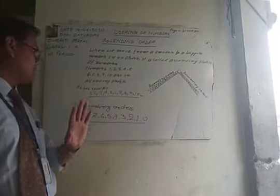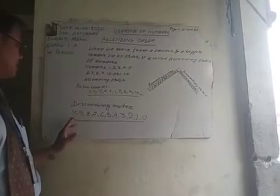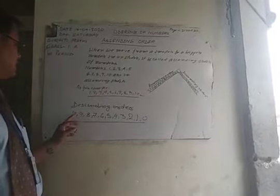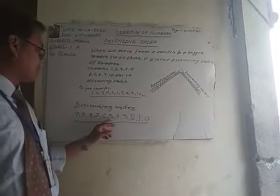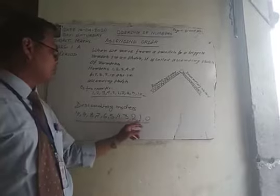Here we have ascending order and descending order. Ascending: 1, 2, 3, 4, 5, 6, 7, 8, 9, 10. Descending: 10, 9, 8, 7, 6, 5, 4, 3, 2, 1, 0.